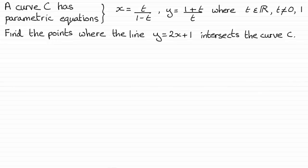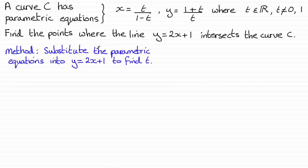The general method is not to transform the parametric equation into Cartesian form and then do simultaneous equations. Instead, the method is to substitute the parametric equations into the Cartesian equation — in this case, y equals 2x plus 1 — and then find the values of t. Once we have those values of t, we substitute them back into the two parametric equations to get the x and y coordinates of the points of intersection.